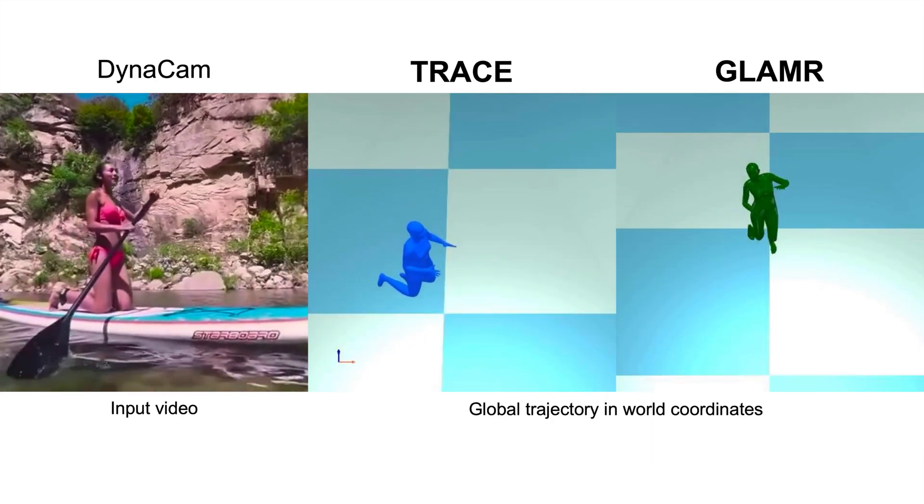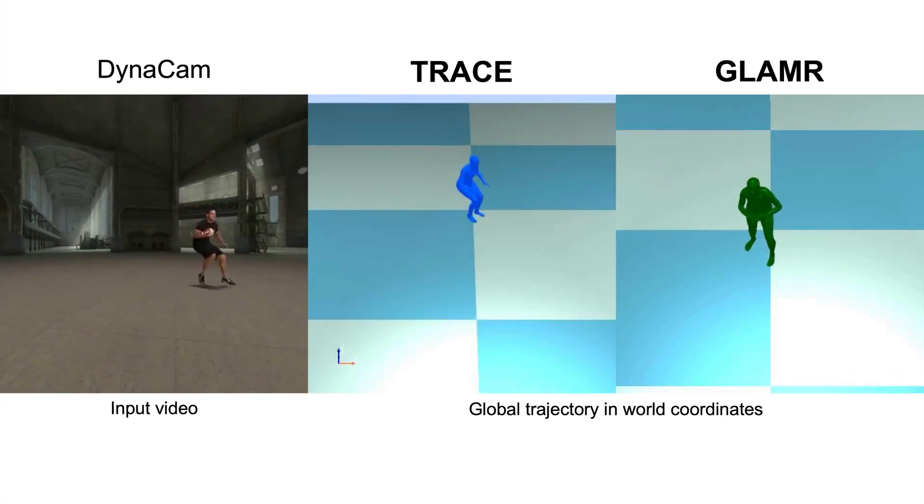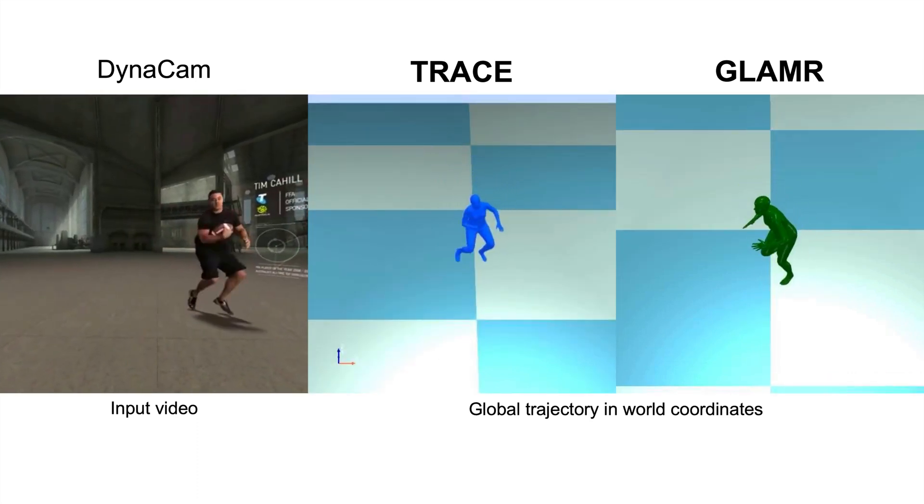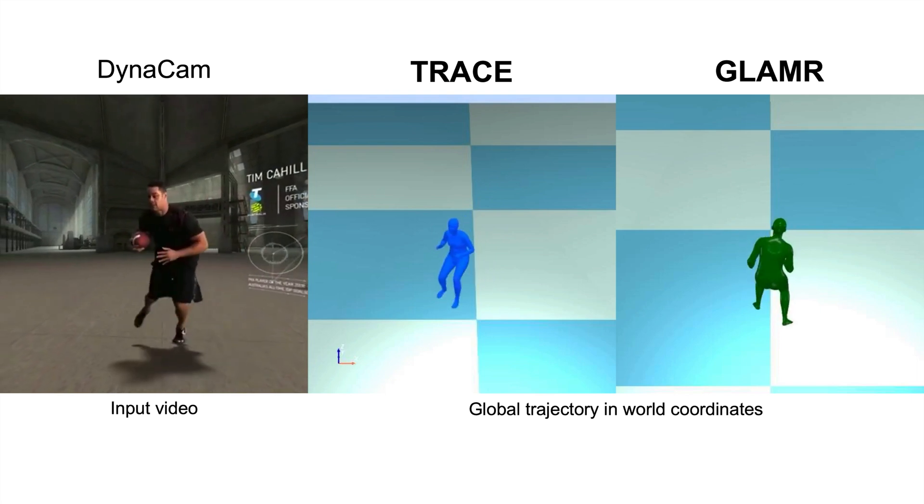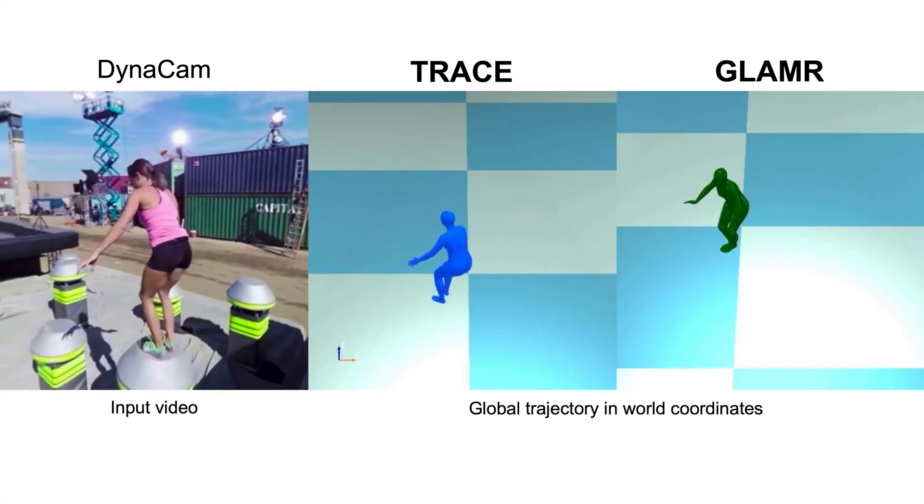Glamour can't perceive scene-related motion, while TRACE can. TRACE performs better in handling complex trajectories. Note that when the human motion state changes rapidly, TRACE still produces reasonable estimates. We also report some failure cases that illustrate the limitations of TRACE.